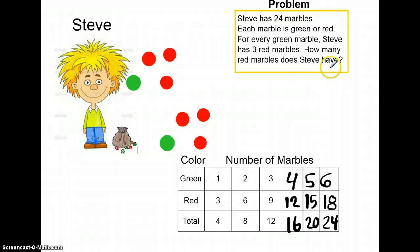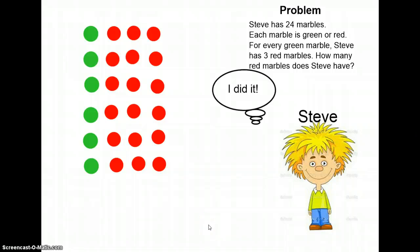How many red marbles does Steve have? Well we know the total is twenty-four, so we can see that he has eighteen red marbles. Let's go ahead and check our answer. Right here we can see that we have green marbles and red marbles. For every green marble, there are three red marbles.